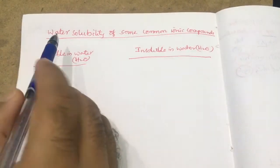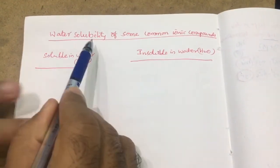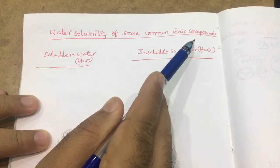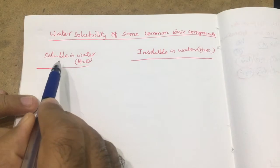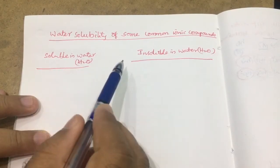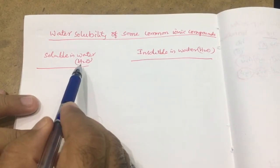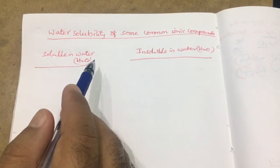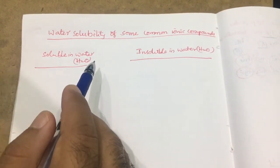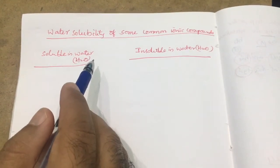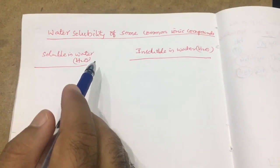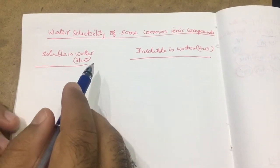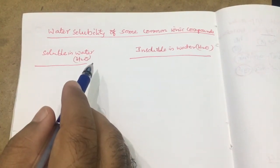Hi students, today I am discussing the water solubility of some common ionic compounds. Some are soluble, some are insoluble in water. Unless given in the question, we have to consider the solubility in water. Which are soluble, which are insoluble? Generally, it is a confusion question for inorganic chemistry in salt analysis also.